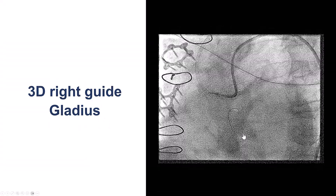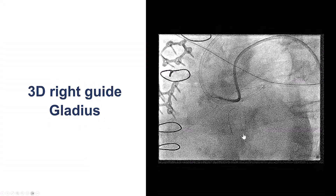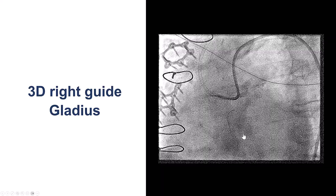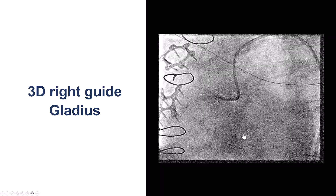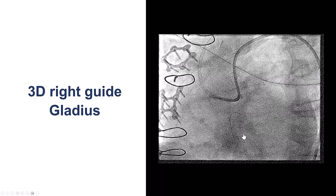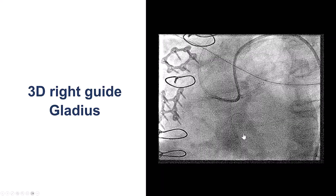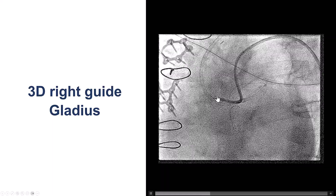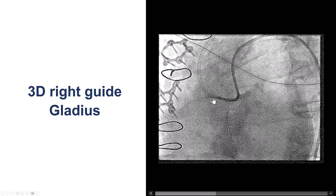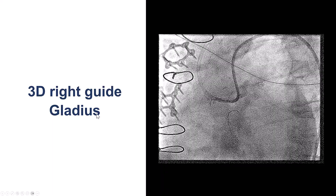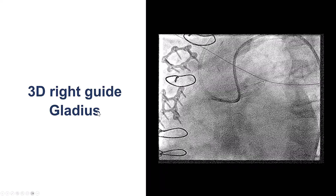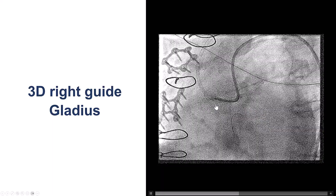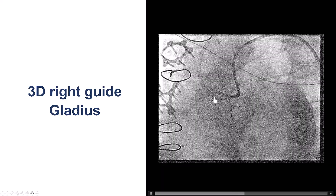After multiple attempts, we decided to switch to antegrade. The JR4 did not provide good support, so we switched to a 3D right guide that was a little more supportive. We used a Turnpike LP microcatheter, a Gladius guidewire, as well as Gaia NEX2.